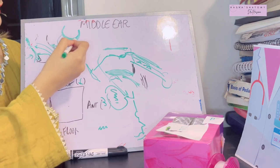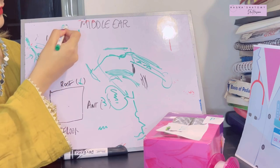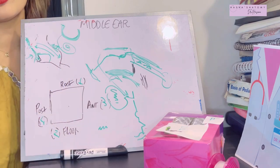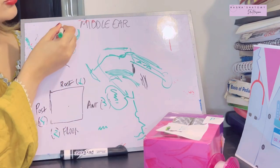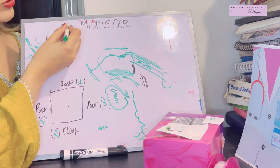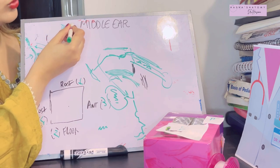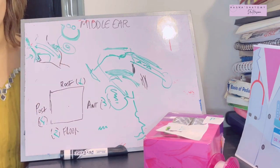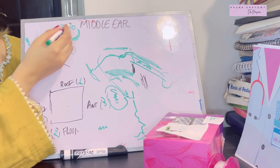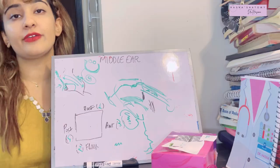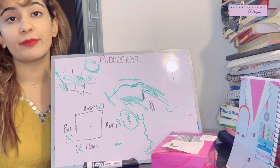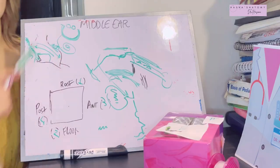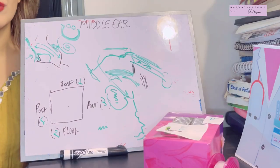The tympanic membrane attaches to the tympanic sulcus, and there is a tympanic notch that is deficient superiorly. Within that tympanic notch are two apertures: one is the anterior canaliculus for the chorda tympani, and the other transmits the tympanic branch of the maxillary artery — an important exam question.